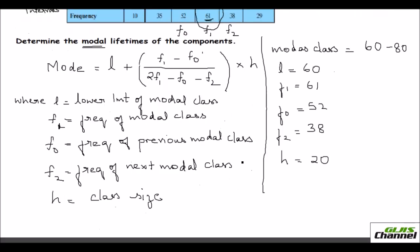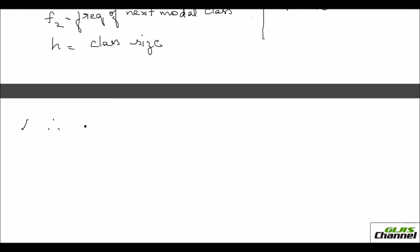Just apply these values in the formula and you get the mode. Therefore, mode is equal to the lower limit, which is 60, plus F1. So that's 61. Take away F0, which is 52, whole divided by twice F1. F1 is 61 again. Minus F0, which is 52, minus F2, which is 38. Do this calculation first and then it is times the class size, which is 20.